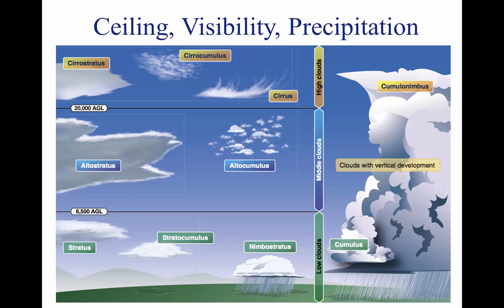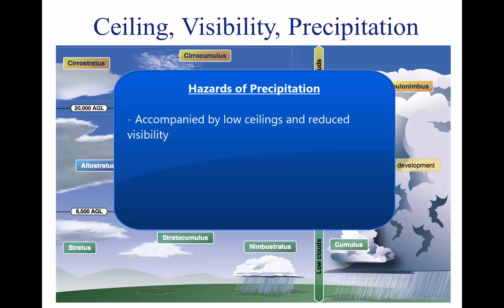Precipitation occurs because water or ice particles in clouds grow in size until the atmosphere can no longer support them. It can occur in several forms as it falls toward the Earth, including drizzle, rain, ice pellets, hail, snow, and ice. Precipitation in any form poses a threat to safety of flight, and it is often accompanied by low ceilings and reduced visibility.